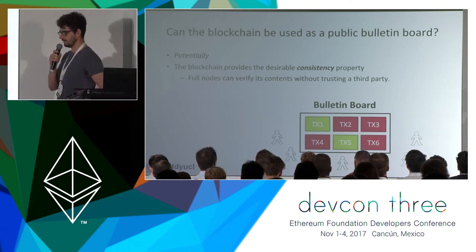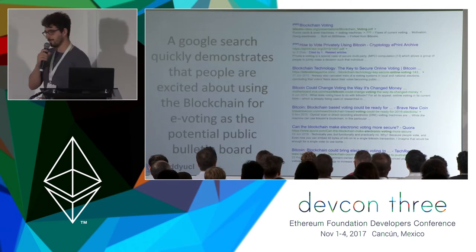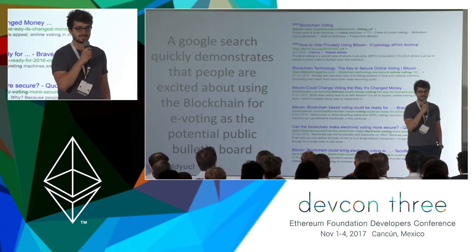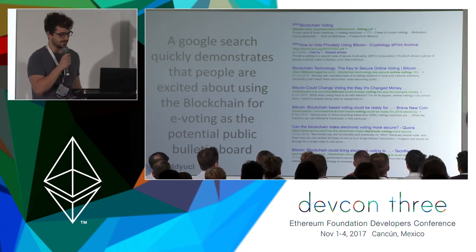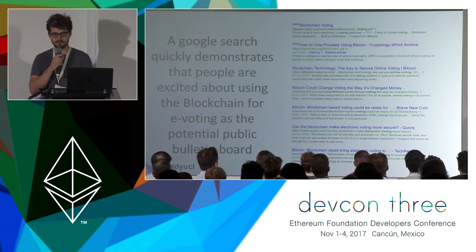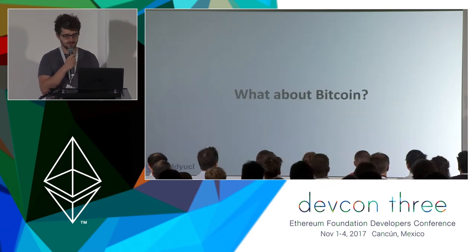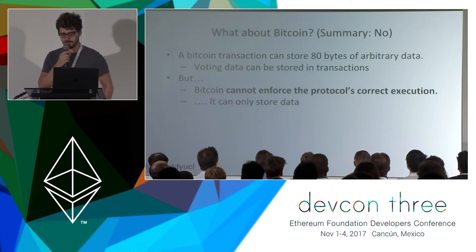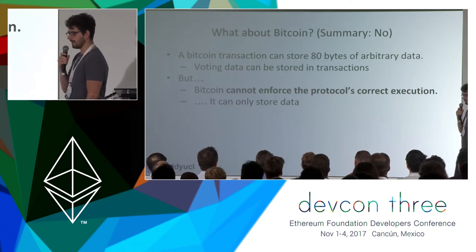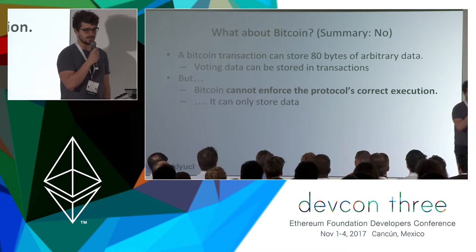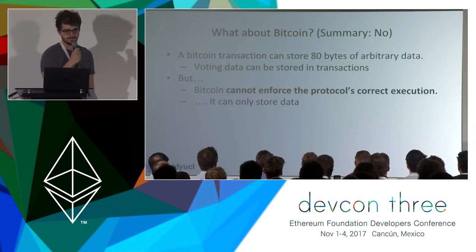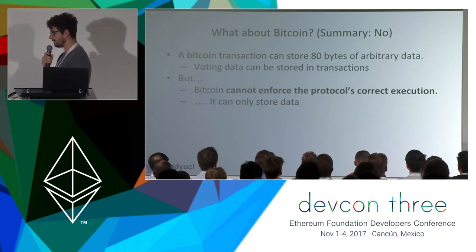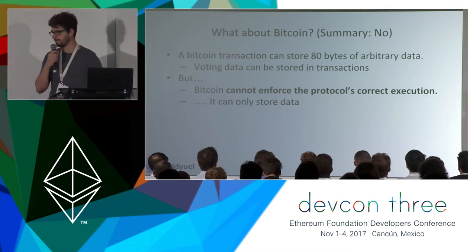I'm not the first person to notice this. Last year I did a Google search and lots of people were getting excited about the blockchain and e-voting. So we needed to decide what blockchain we're going to use. What about Bitcoin? Should we use Bitcoin for e-voting? I'm going to summarize and say no. Bitcoin's not a very good place to do this because we can only store 80 bytes of arbitrary data, and Bitcoin cannot verify that our protocol was correctly executed.